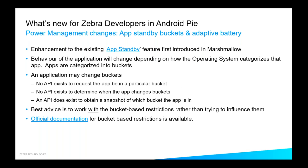The first one I'm going to be talking about is the app standby buckets. This is an enhancement to a previous feature called app standby that was introduced in Android Marshmallow. We now have a notion that an application can exist in a particular bucket, and depending on which bucket you're in, it affects what your application is able to do when it's in the background. Just understand that there's no API to request that you be put in a particular bucket, no callback to say when your bucket changes, and no real way for you as an application to influence what bucket you're put in. The best advice is to work within these bucket restrictions where possible.